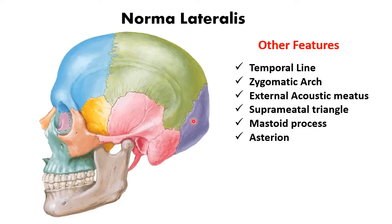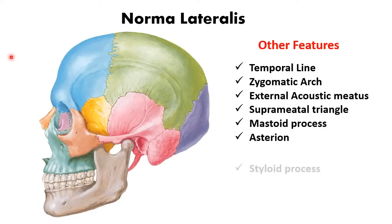The asterion is the point where the parietomastoid, occipitomastoid, and lambdoid sutures meet. In fetal life, this point presents a membranous gap known as the posterior lateral fontanel.